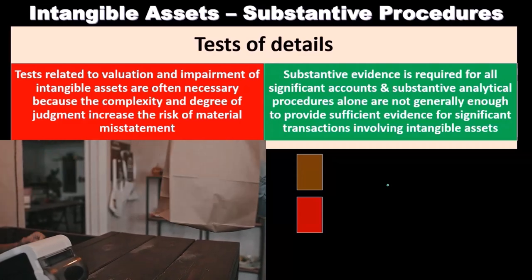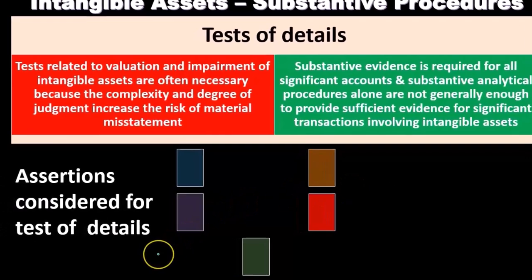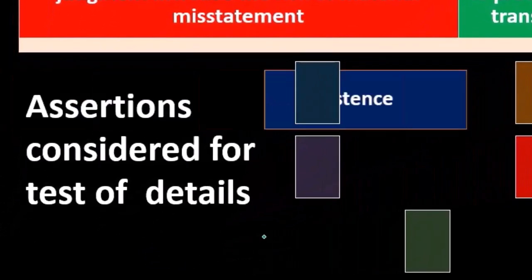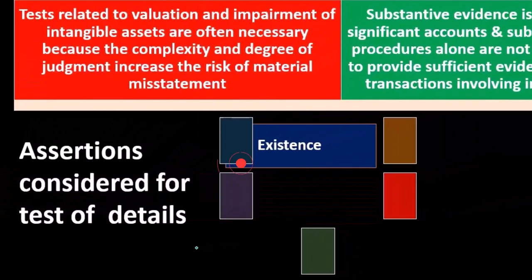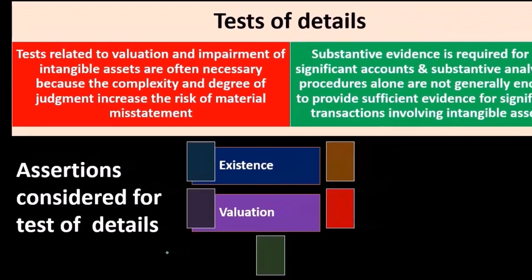The assertion considerations for tests of details will typically include existence — the existence of the intangible assets. Since they're intangible, we want to make sure that they exist, and we can't just go out and look at them as we would with property, plant, and equipment. So that's going to be a concern for us to consider, along with the valuation of them.